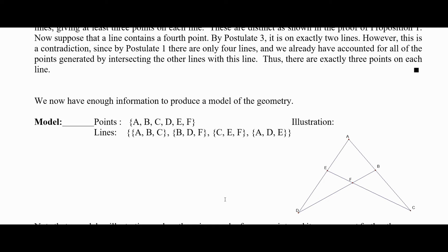I'm sorry, not the only way you can make sets of three points, but here's one way to make it work. A, B, and C, B, D, and F, C, E, and F, and A, D, and E. There are other sets of three points, but they would not be lines. And there's the illustration. Remember the model is over here. It's the set of points and the set of lines.